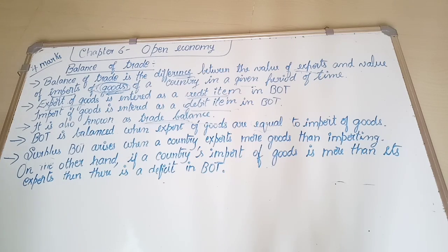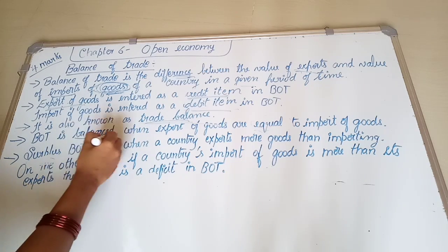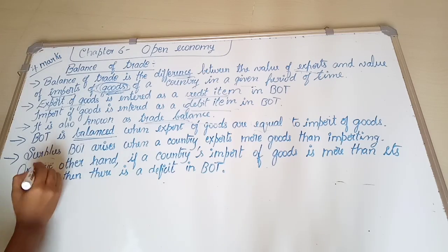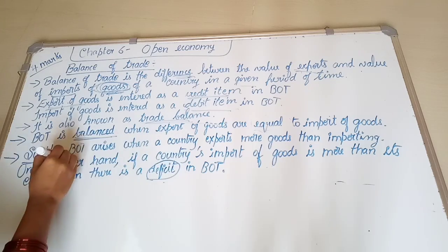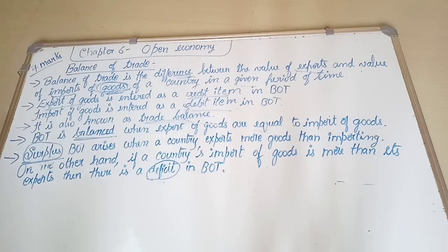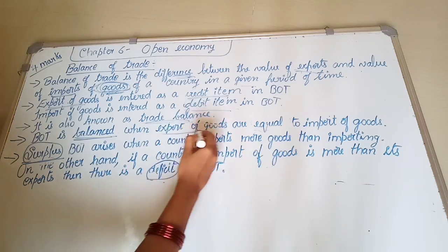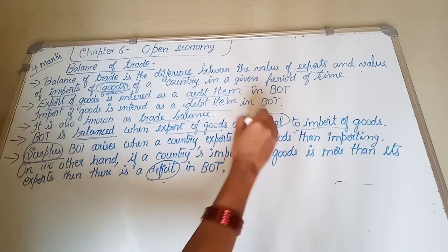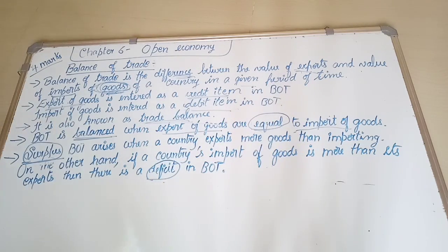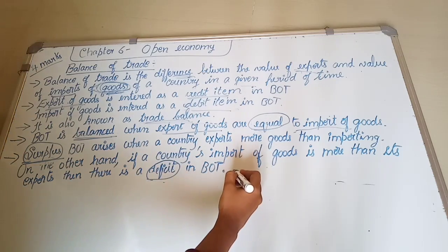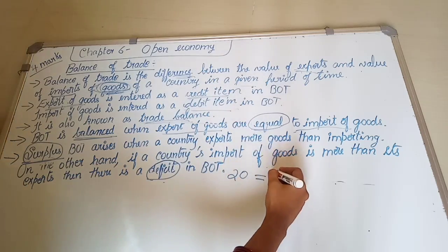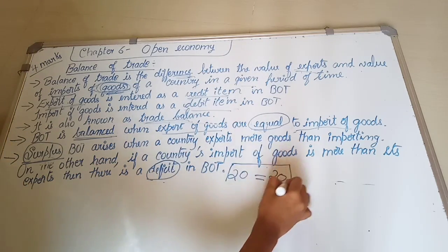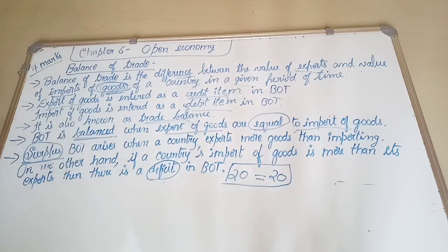Now, this balance of trade can be of three types: balanced, surplus, or deficit. Balanced means when the export of goods is equal to the import of goods, we say that the balance of trade is balanced. For example, if India imports 20 goods and also exports 20 goods, the BOT is balanced. However, this situation is rarely possible.